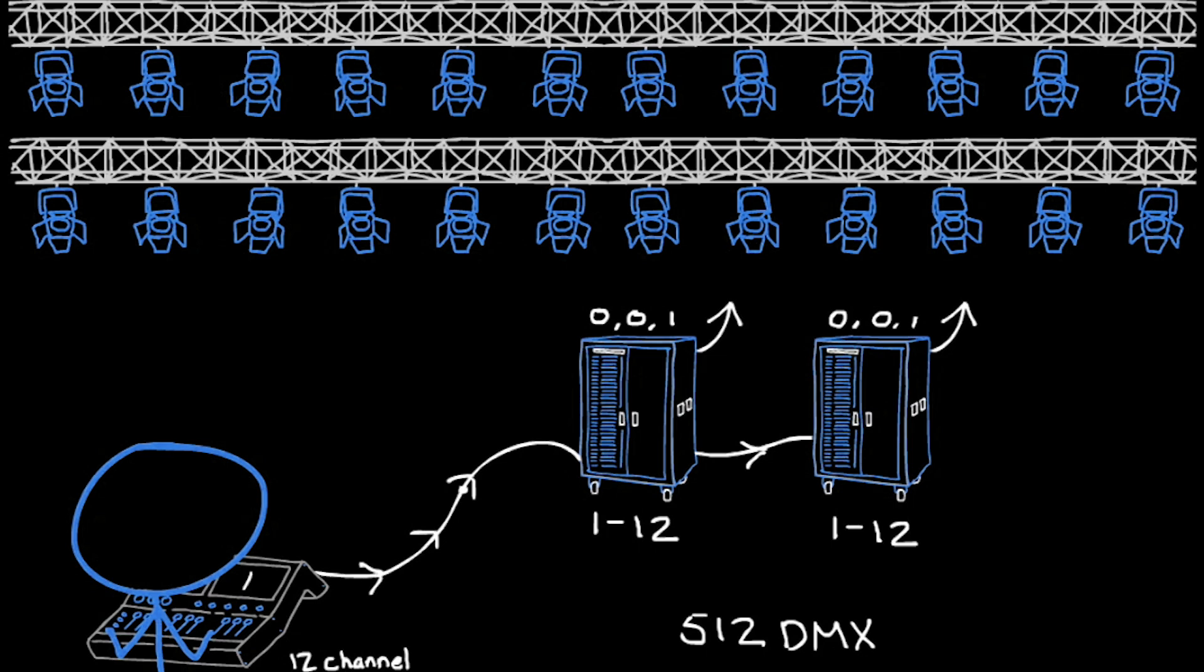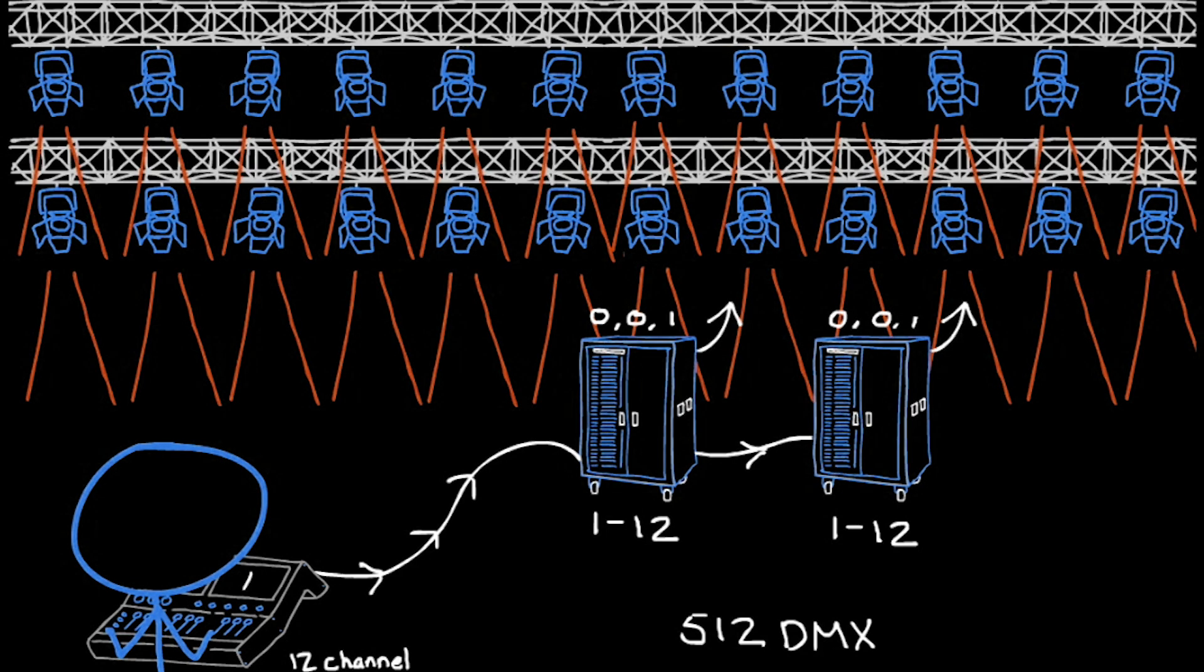So when I bring up channel 1, it turns on dimmer 1 and dimmer 1 here. So whatever is plugging into dimmer 1, and dimmer 1 is going to turn on. DMX allows you to move numbers around as long as they aren't overlapping. Further example of this.